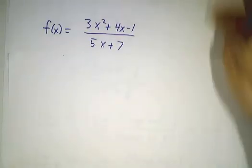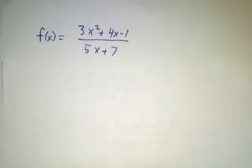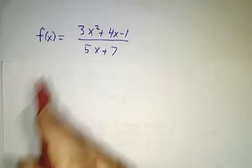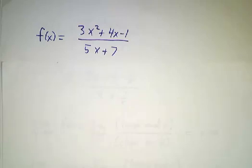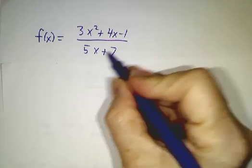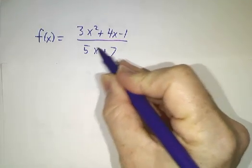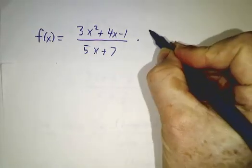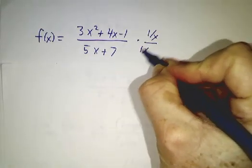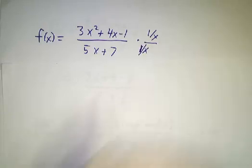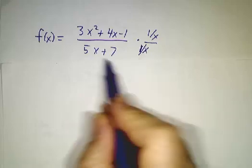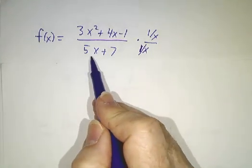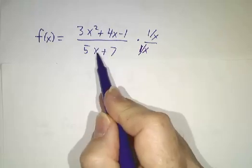Our first example is 3x squared plus 4x minus 1, over 5x plus 7. Our strategy is we're always going to divide by enough powers of x to get rid of the leading power downstairs. So here we have 1 power of x downstairs, so we're going to divide the top and the bottom by x. This makes sense because we're not dividing by 0 — we're looking at what happens as x goes to infinity, so it's perfectly okay to divide by x.